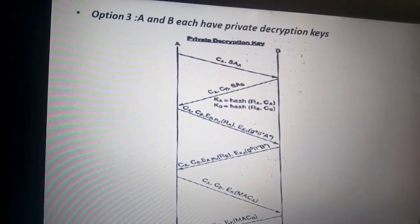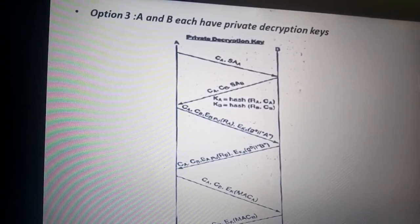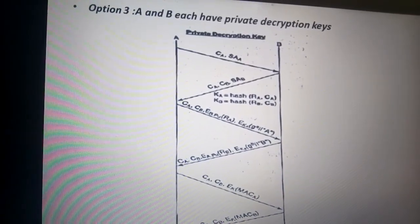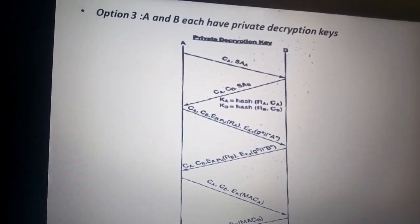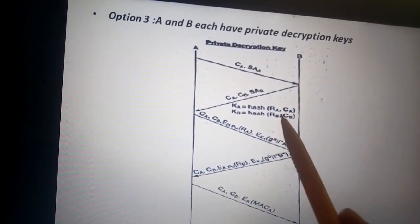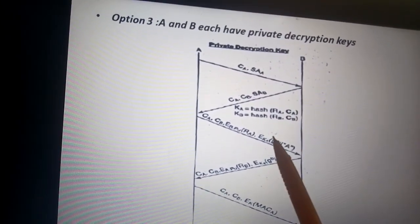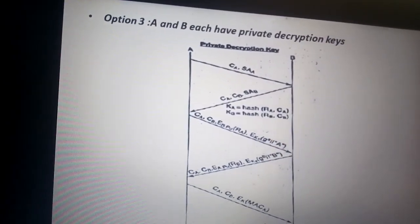Each side encrypts its identity together with the Diffie-Hellman partial key using temporary keys KA and KB, where KA and KB are the hash of the nonces and cookies. In messages 5 and 6, each side transmits a MAC; the MAC key is a function of the two nonces RA and RB. If A or B were unable to decrypt the nonces generated by the other side, they would be unable to compute the correct MAC.